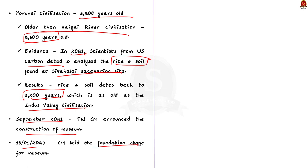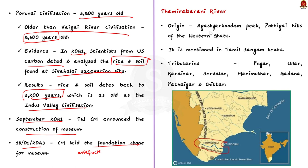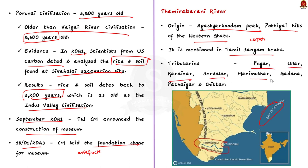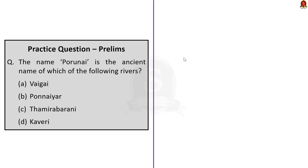The proposed museum will showcase artifacts excavated from Porunai civilization sites. Porunai civilization is considered older than the Vaigai river civilization, which is about 2,600 years old. The Tamirabarani river originates from the Agasthyarkoodam peak of the Podhigai hills of the Western Ghats, flows through Tirunelveli and Thoothukudi districts, and merges into the Gulf of Mannar of the Bay of Bengal. The river has a distinct reddish tinge due to copper content in the water. Important tributaries include Payar, Ullar, Karayar, Servalar, Manimuthar, Gadana, Pacchayar and Chittar.